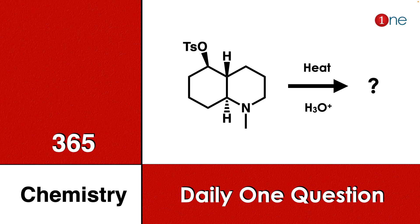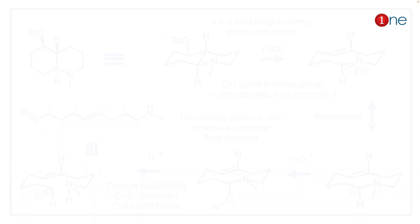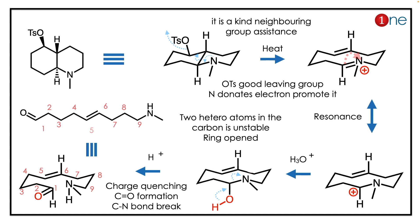Welcome to One Chemistry. This is the 365 Chemistry series — daily one question for you. Here you have a fused ring system with a tosylate leaving group, the hydrogens are trans to each other, and you have an amine. It's a basic decalin architecture. You are heating and further hydrolysing — you have to find what the final product will be.